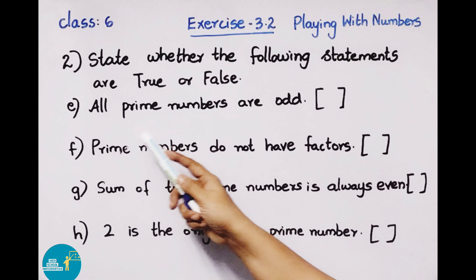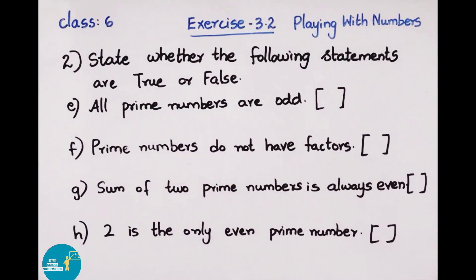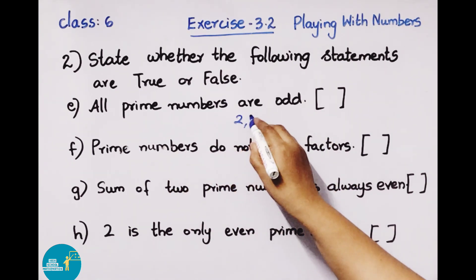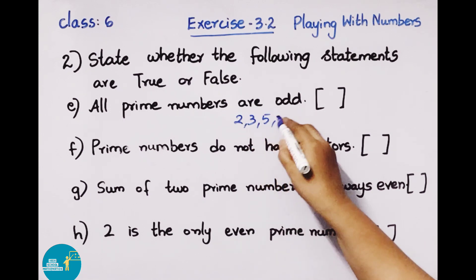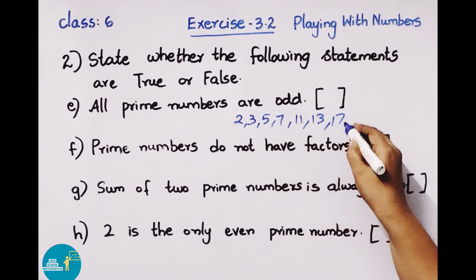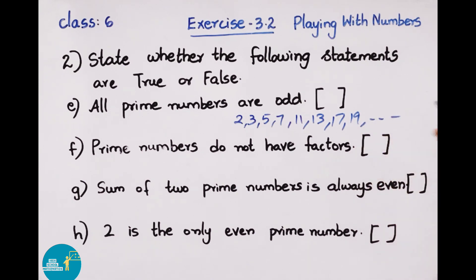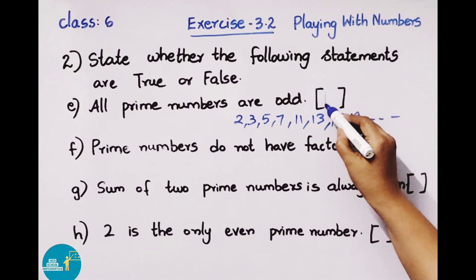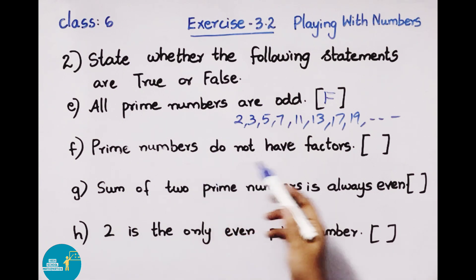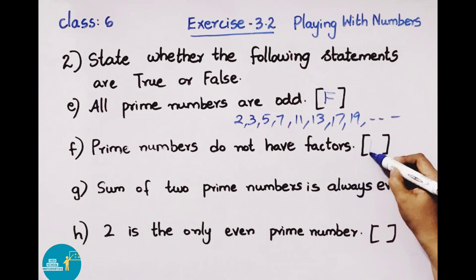Statement e: All prime numbers are odd. Prime numbers list: 2, 3, 5, 7, 11, 13, 17, 19, and so on. In the prime numbers list, except 2, all other numbers are odd. But the statement says all prime numbers are odd, so the statement is false. Next, statement f: Prime numbers do not have factors. Every prime number has 2 factors: 1 and itself. So it is false.